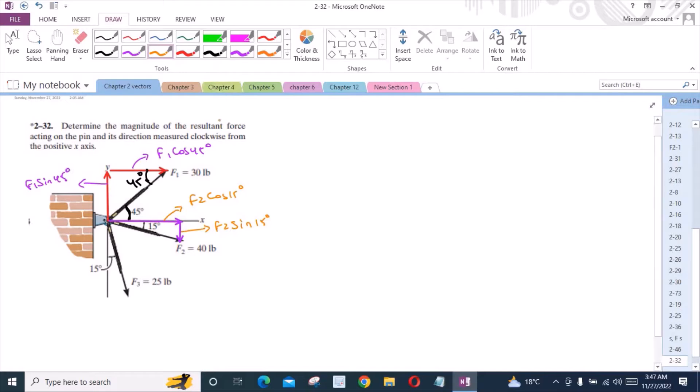Now for the force F3, I have one horizontal component and one vertical component. This is F3 sin 15 degrees and that is F3 cos 15 degrees. Now we have resolved all the forces into their components.